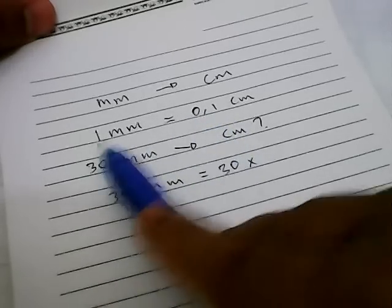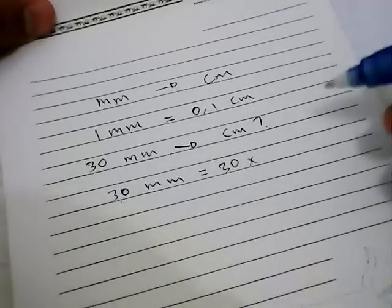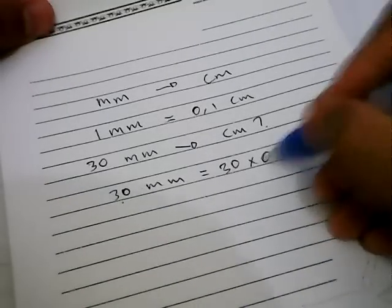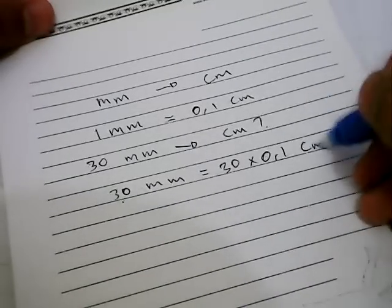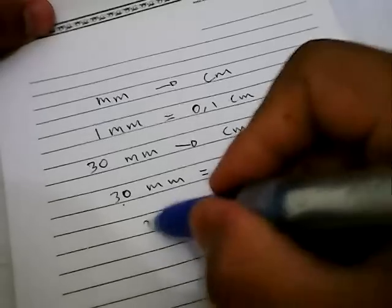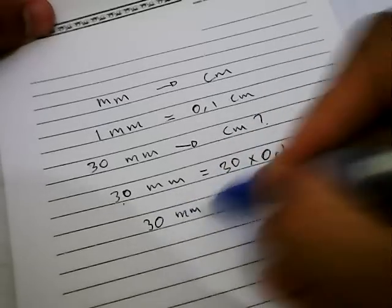The result is 3 centimeters. So 30 millimeters converted into centimeters is equal to 3 centimeters.